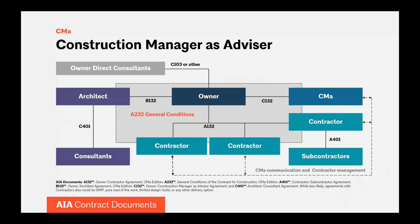Now let's look at construction manager advisor — the topic of our webinar today. CMA is appropriate when an owner uses multiple direct-to-owner contracts to build the project. This may be an owner's choice or a statutory requirement as found in a number of states. The project now incorporates a fourth primary player on the project team — the construction manager advisor. The A232 general conditions coordinate the roles and responsibilities of all parties during construction, written to take into account the CMA's role and multiple contractors.